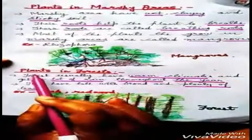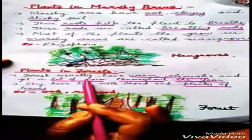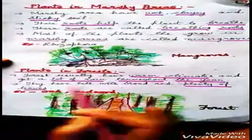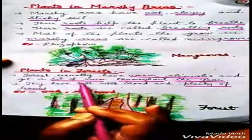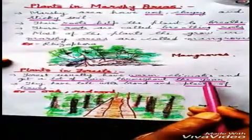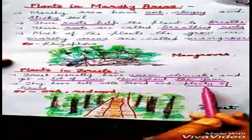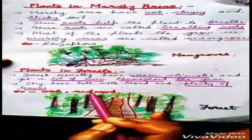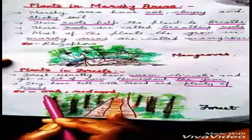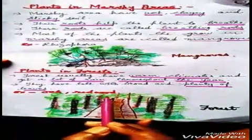Next are plants in forests. Forests usually have warm climates and get a lot of rain throughout the year. Forest plants are tall with broad and plenty of leaves. For example, oak and redwood.